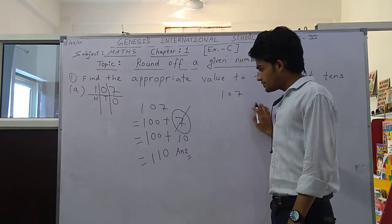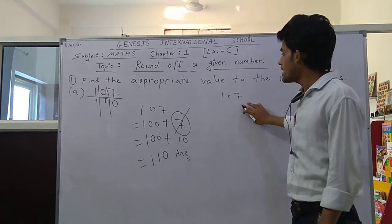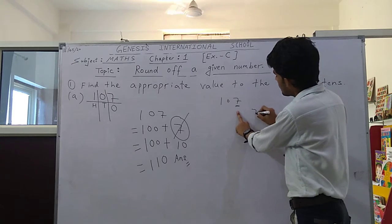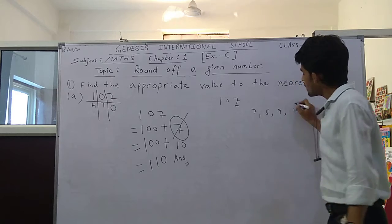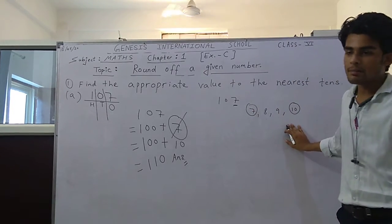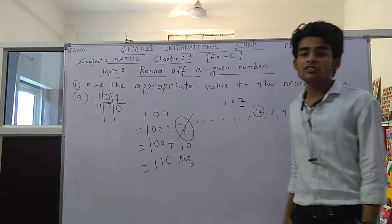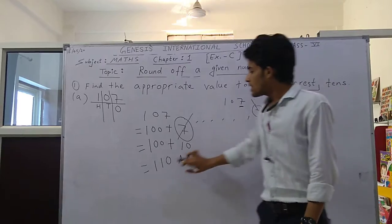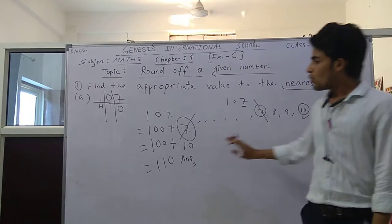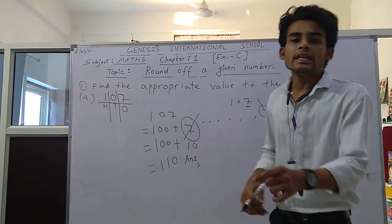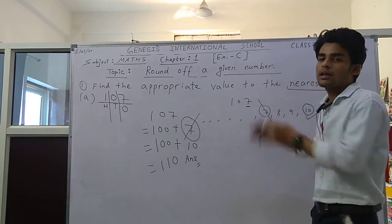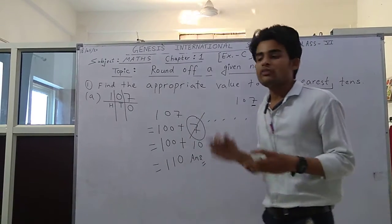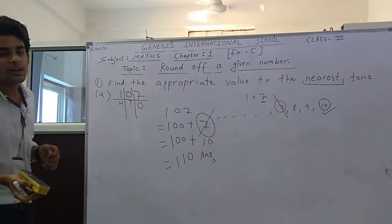When we compare ones place to tens place, we see the digit at ones place is seven. Seven ke baad eight, eight ke baad nine, nine ke baad ten. To reach nearest ten, only two digit distance. But to go back to one, you have to skip many digits. So nearest tens place value is ten. One hundred seven becomes one hundred and ten when it is rounded off to the nearest tens.